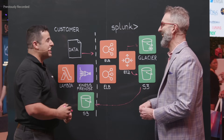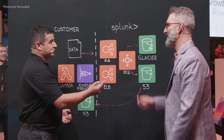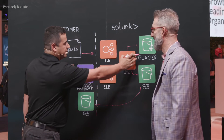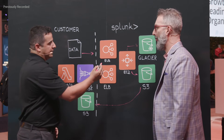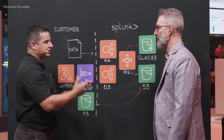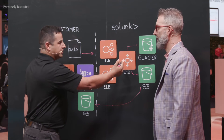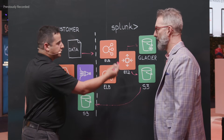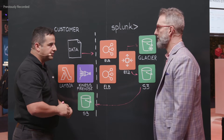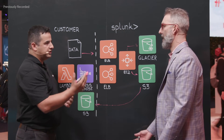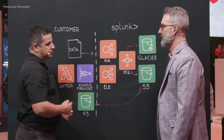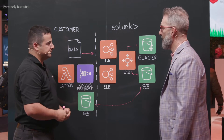What else do you have to tell us about the architecture? The Glacier aspect allows us to have a self-store where customers can rehydrate the data from Glacier through the UI. So if they have a compliance need or they just need to restore data in the short term, they can do that using the UI directly in the Splunk Cloud UI.